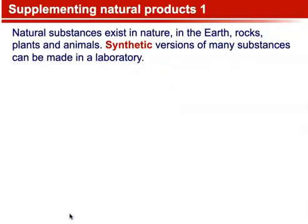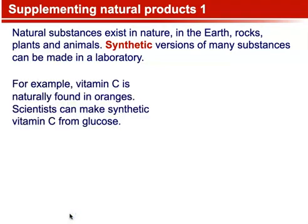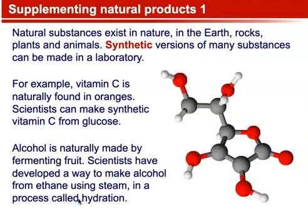Supplementing Natural Products. Natural substances exist in nature — in the earth, in rocks, as well as in plants and animals. Synthetic versions of many substances can be made in a laboratory. For example, vitamin C is naturally found in oranges, but scientists can make synthetic vitamin C from glucose. Alcohol is naturally made by fermenting fruit, and scientists have developed a way to make alcohol from ethane using steam, in a process called hydration.